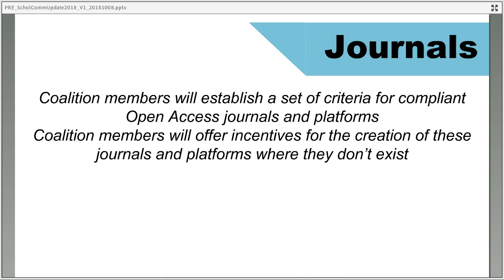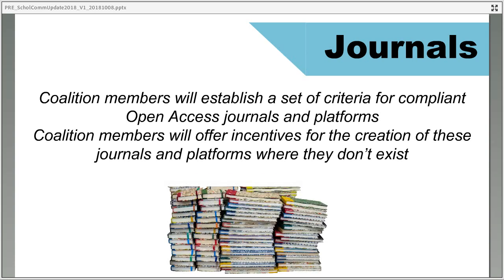The coalition members are going to work to establish a set of criteria for what an open access journal or platform is, and they're going to offer incentives for the creation of these where they don't exist. This has got some people worried because to create new journals and launch new platforms successfully takes time. Some are worried that the January 2020 deadline doesn't really leave enough time to do it properly — there are concerns about it being a bit of a rush and a botched job.